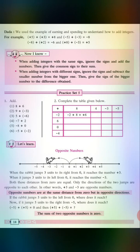Look at the picture of the rabbits which is shown on the number line. When the rabbit jumps 3 units to its right from 0, where does it reach? Yes, it reaches the number plus 3.